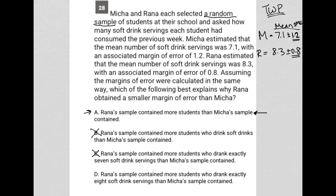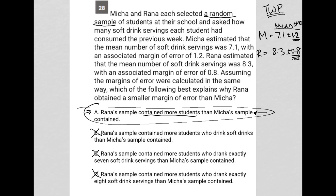Choice D: Rana's sample contained more students who drank exactly eight soft drink servings than Misha's sample contained. Same reason as B and C — D is gone. We want it to be random; we're assuming it's random and that their methods are exactly the same. So we can't say that B, C, or D are correct, although they could have been, but we don't have that data. But if everything was random as stated, and Rana's sample contained more students, then that definitely would impact the margin of error. So Choice A is the correct answer.